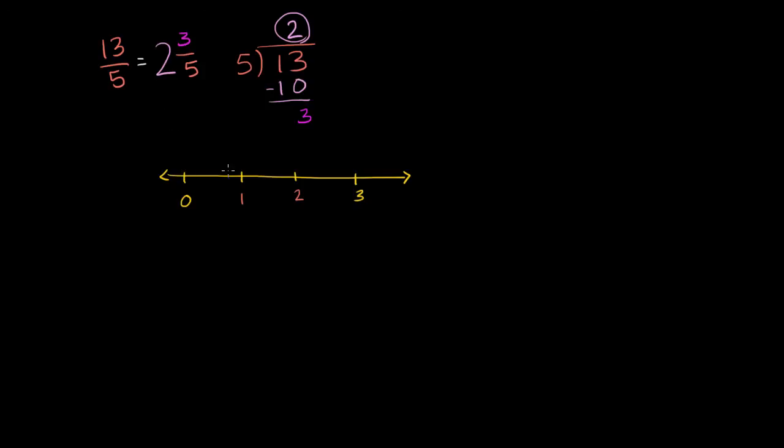If we keep increasing, this is 1. This gets us to 2. But now we have to go another 3 fifths. And so let me mark off the fifths over here. So this is 1 fifth, 2 fifth, 3 fifths, 4 fifths. And then 5 fifths will get us to the next whole number, which is 3.